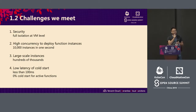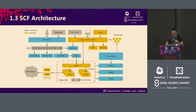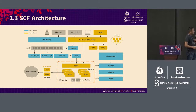We also have strong requirements on cold start. If you open a WeChat Small App for the first time and there is some delay or latency, it will lead to bad user experience. So that's why we face such challenges. Our SCF architecture has undergone several rounds of optimization, as shown in this architecture chart with yellow and blue parts. The blue is the control stream.